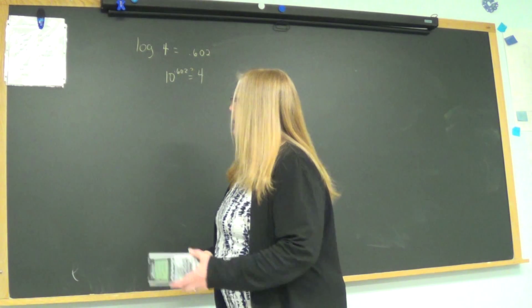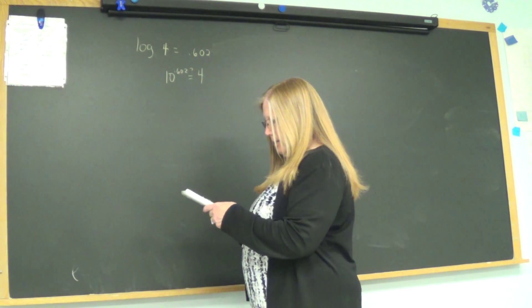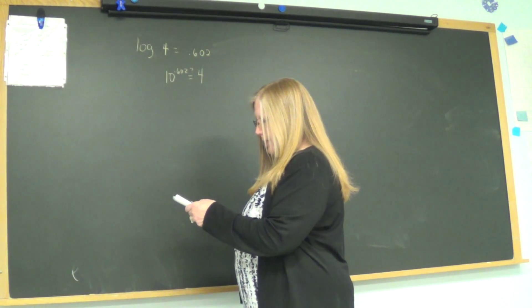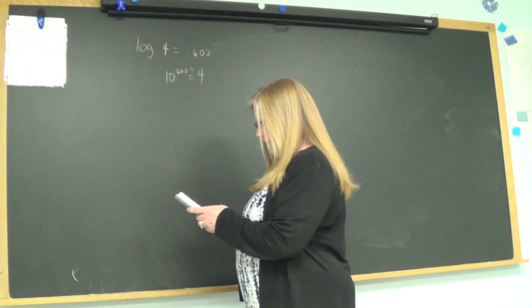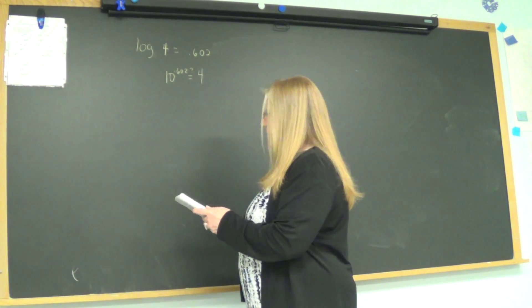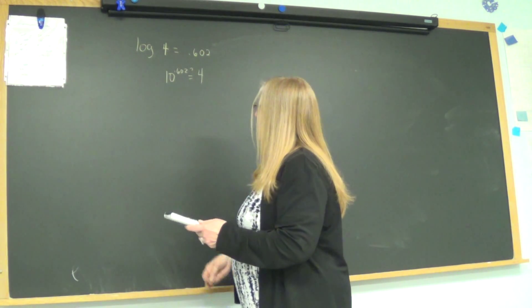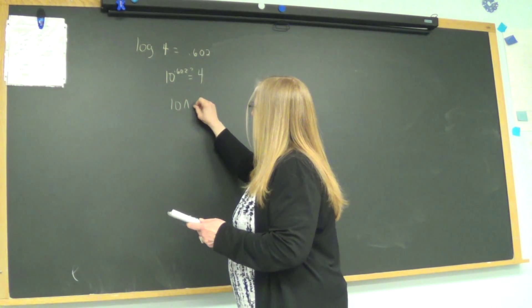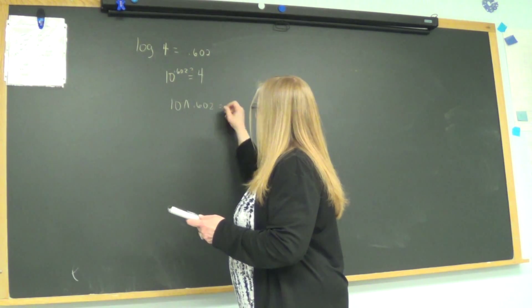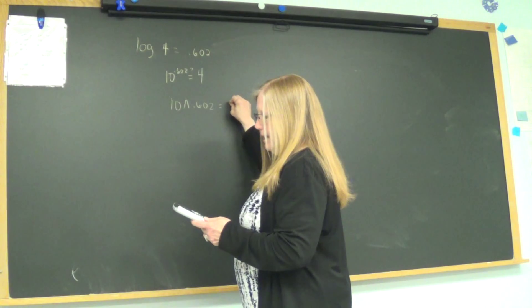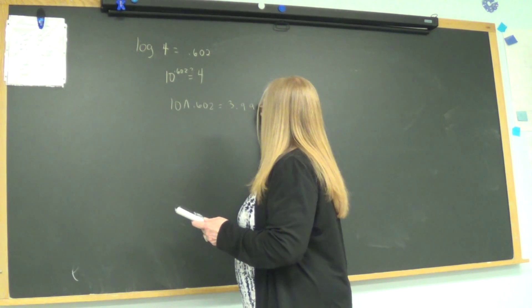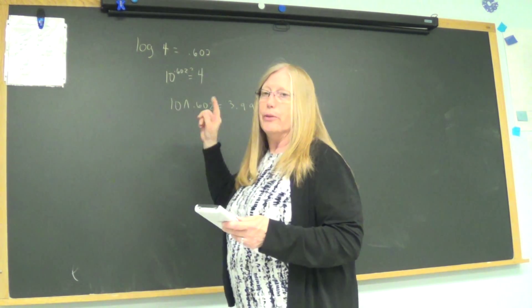So there's a button that will raise 10 to anything, and it's actually above the LOG button. So if you hit 10 raised to the 0.602, you can use that button, or you can just plug in 10 raised to the 0.602. And when you do that, either way, you're going to get 3.999 something. So very close to 4.